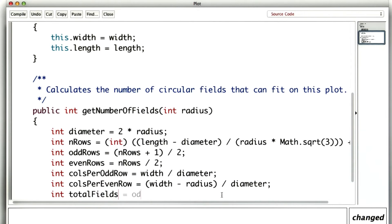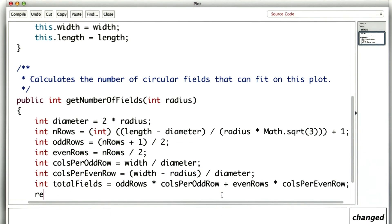And then the total number of fields is the odd rows times the number of columns per odd row, and then the number of even rows times the number of columns per even row. And this number, total fields, is what we wanted to return.